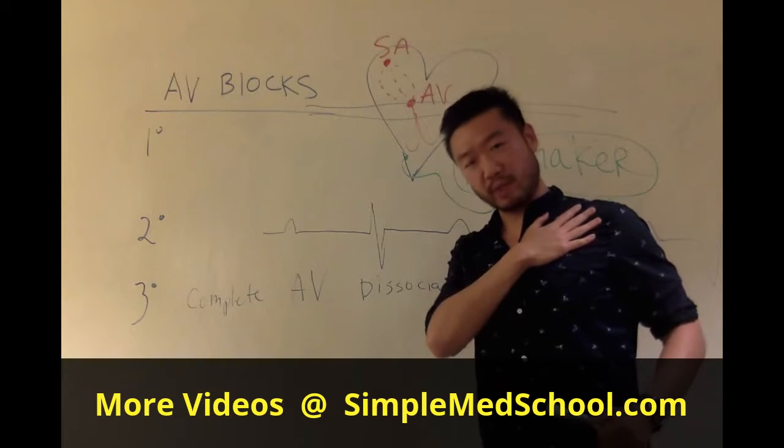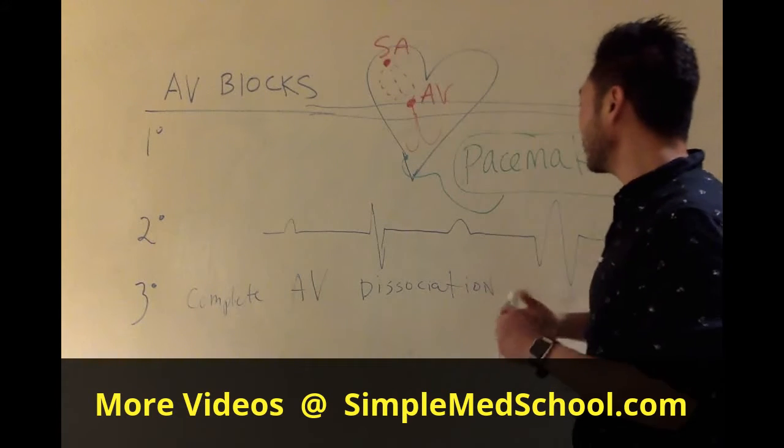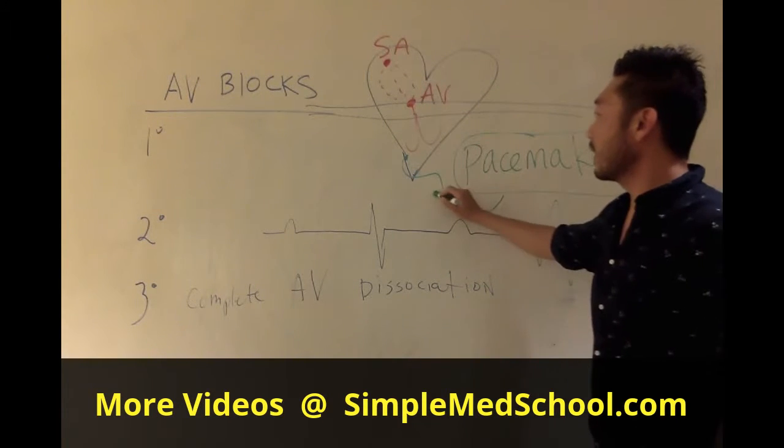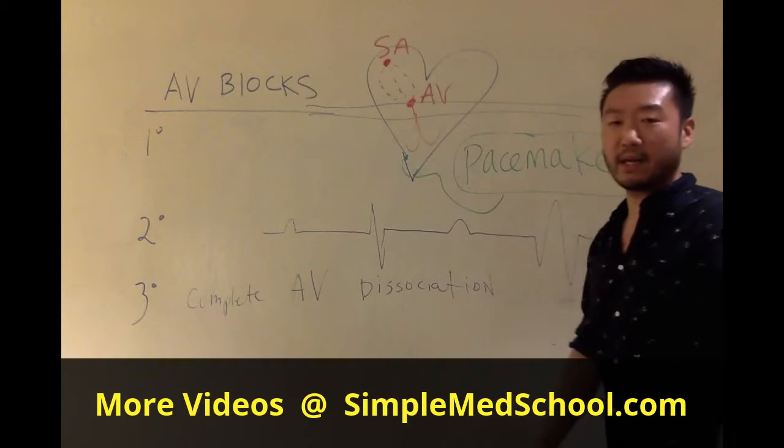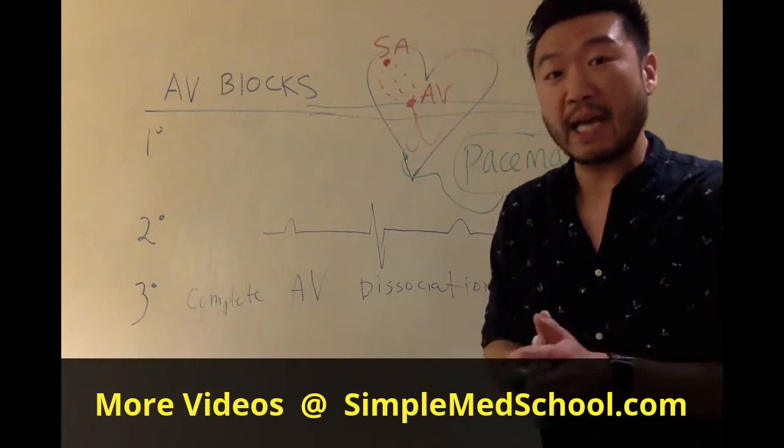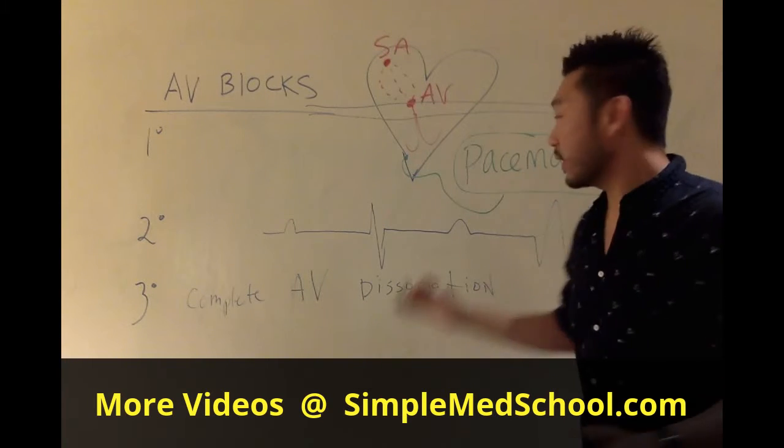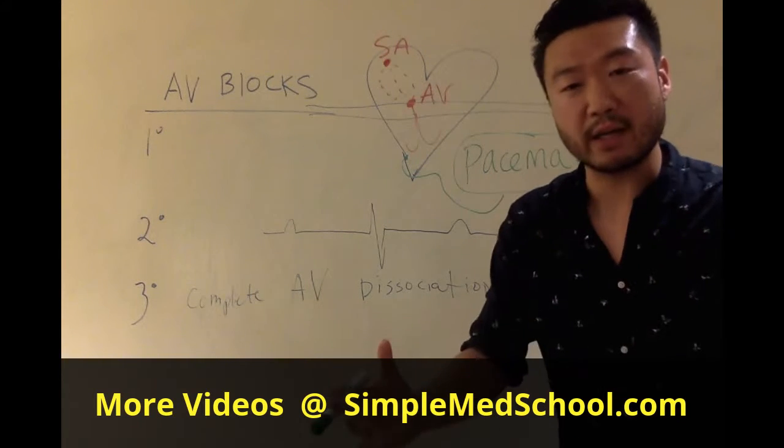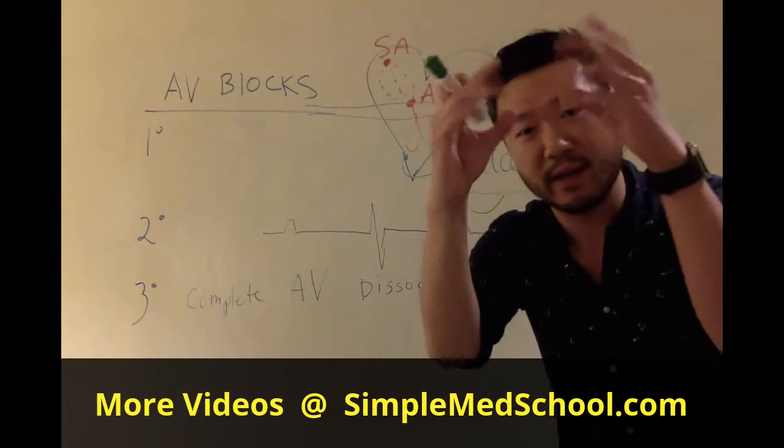Pacemaker, they usually put it right on the chest, and they have these little electrical wires, and they put it right there in the ventricle. And now the ventricle has an electrical rhythm coming from the pacemaker. So it's not going to go into that crazy V-fib.